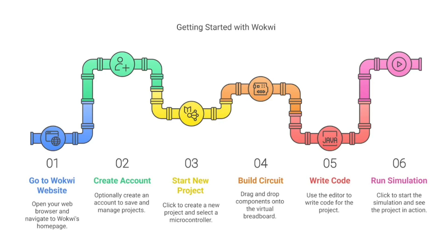How to get started with Vokvi? Go to the Vokvi website — open your web browser and go to Vokvi.com — and then create an account. Creating an account allows you to save and manage your projects. Then start a new project and choose the microcontroller you want, like ESP32 or Arduino.